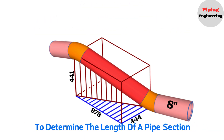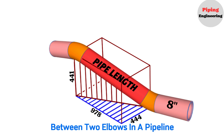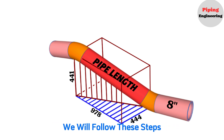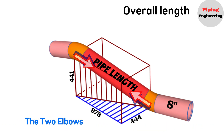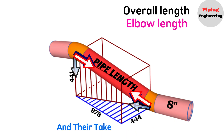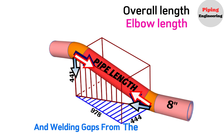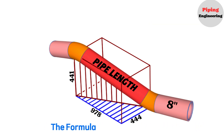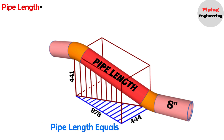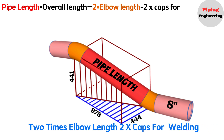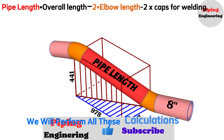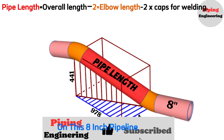To determine the length of a pipe section between two elbows in a pipeline, we will follow these steps: calculate the overall length and the center-to-center distance between the two elbows; determine the angle, length of the elbows, and their takeoff dimensions; and finally subtract the elbow lengths and welding gaps from the overall length. The formula can be expressed as pipe length equals overall length minus two times elbow length minus two times the caps for welding. We will perform all these calculations step-by-step on this 8-inch pipeline section.